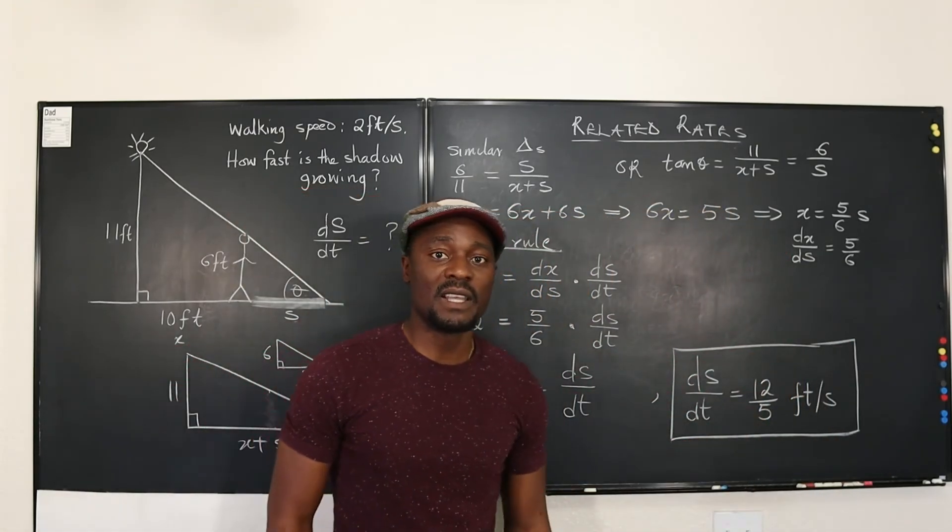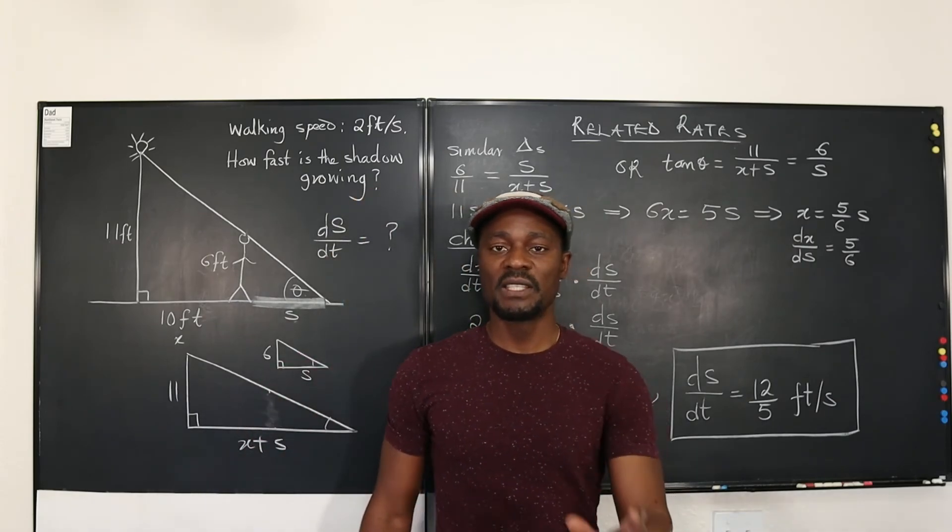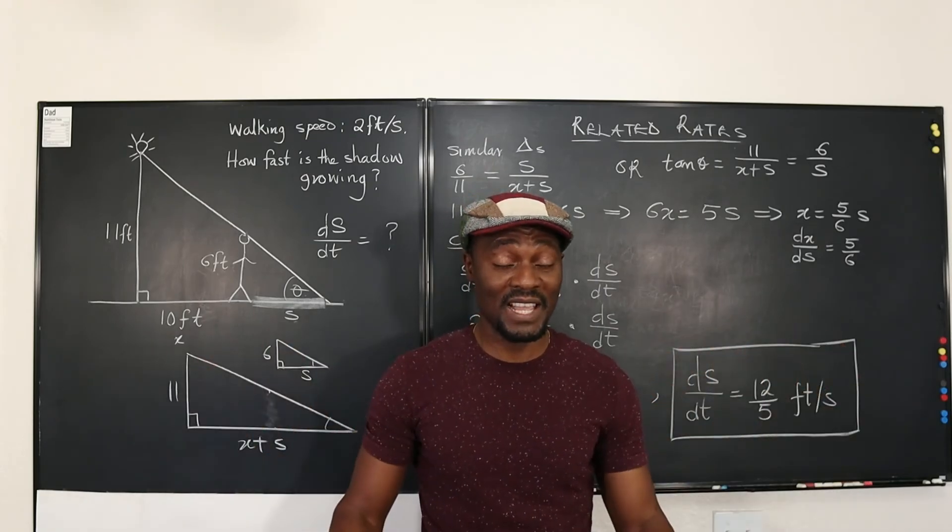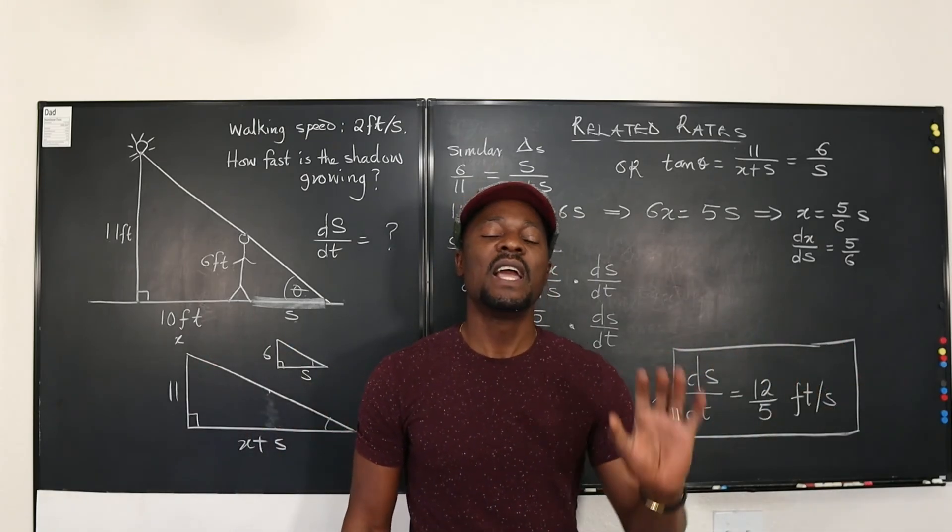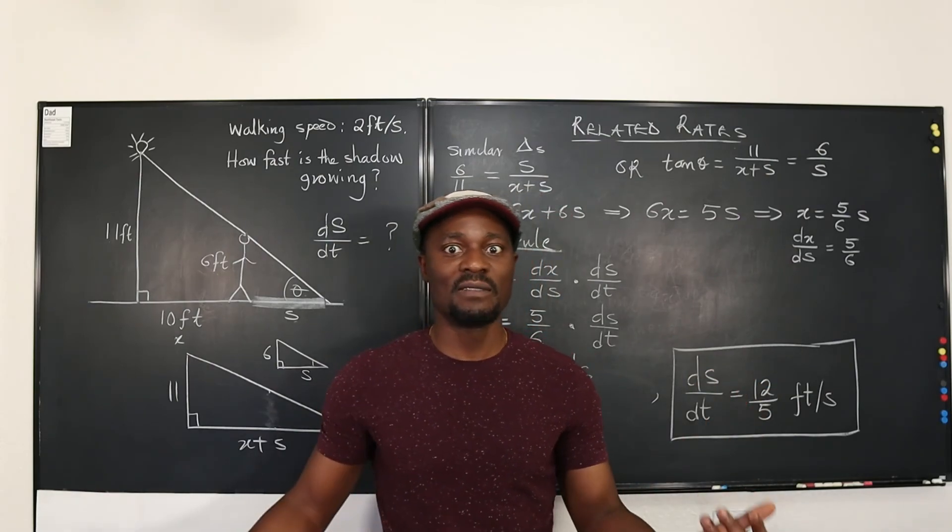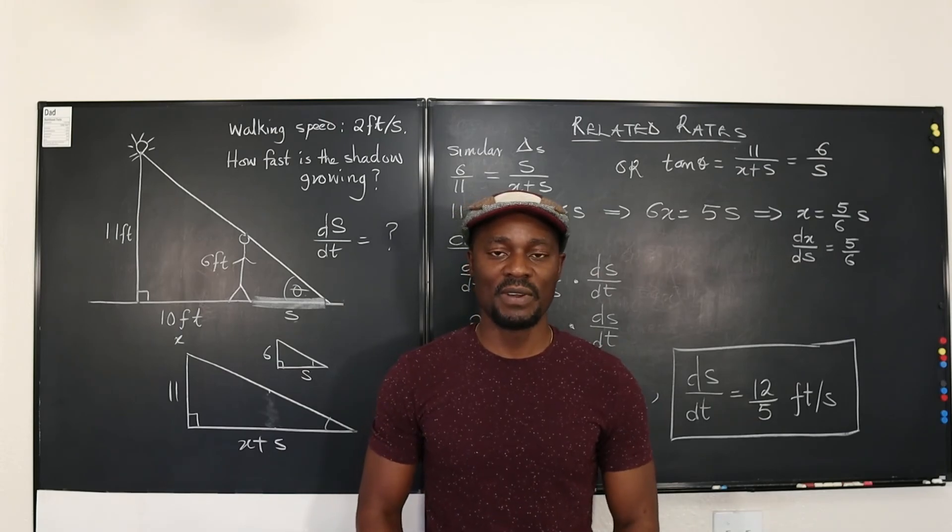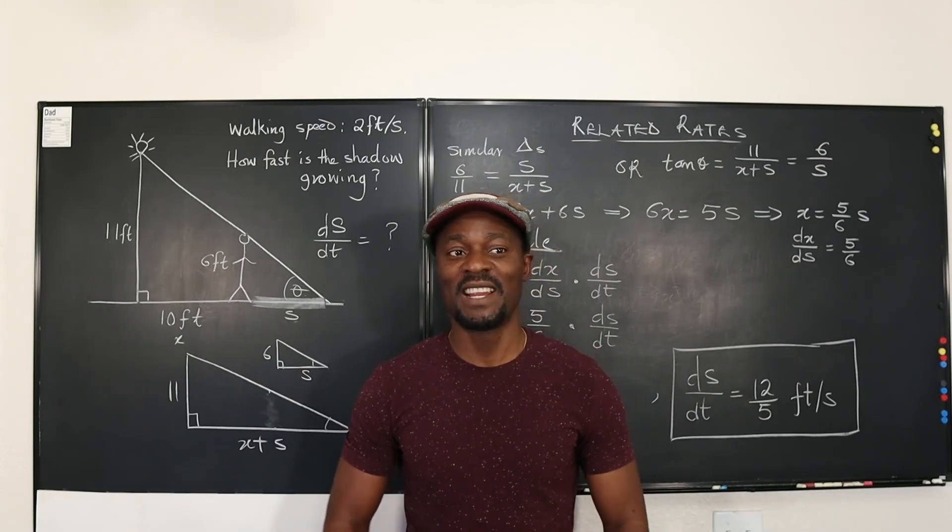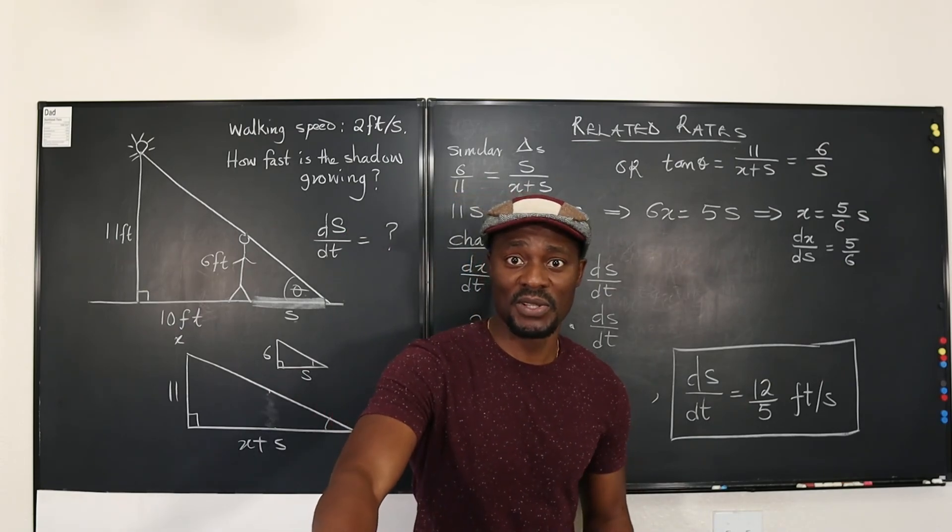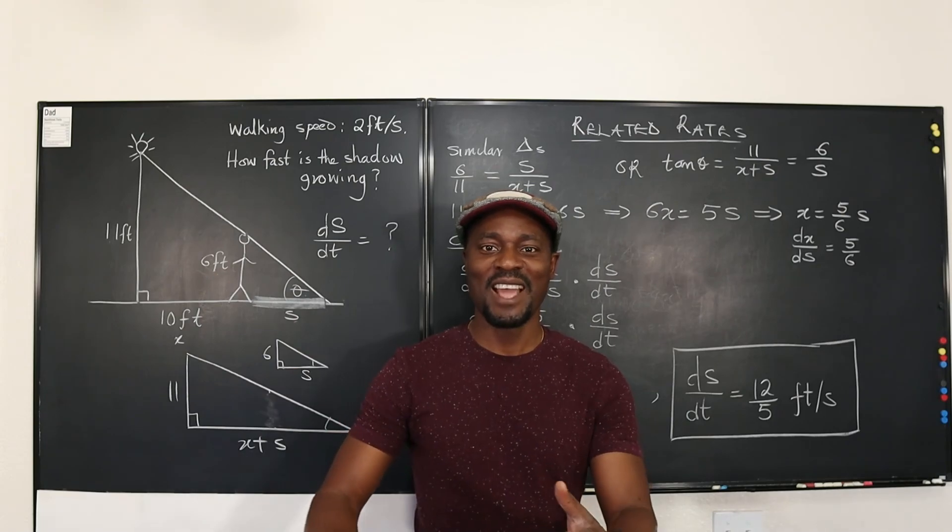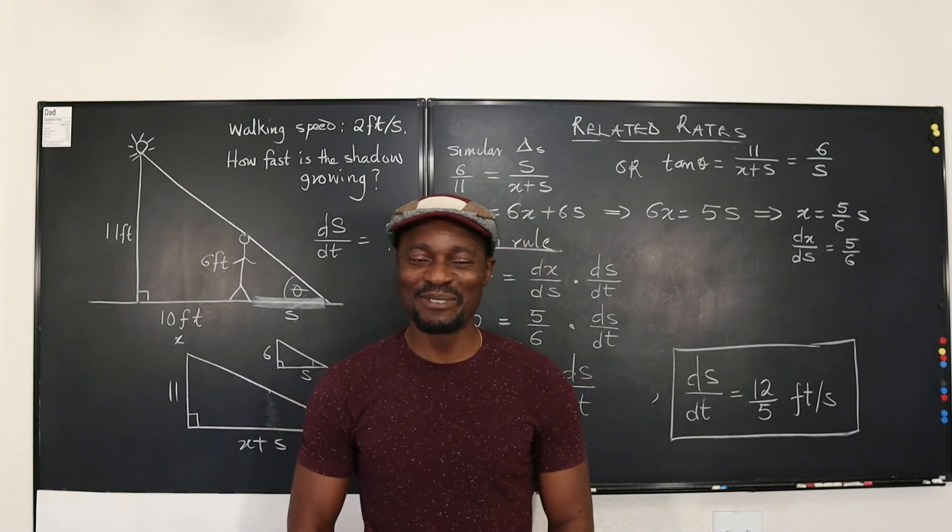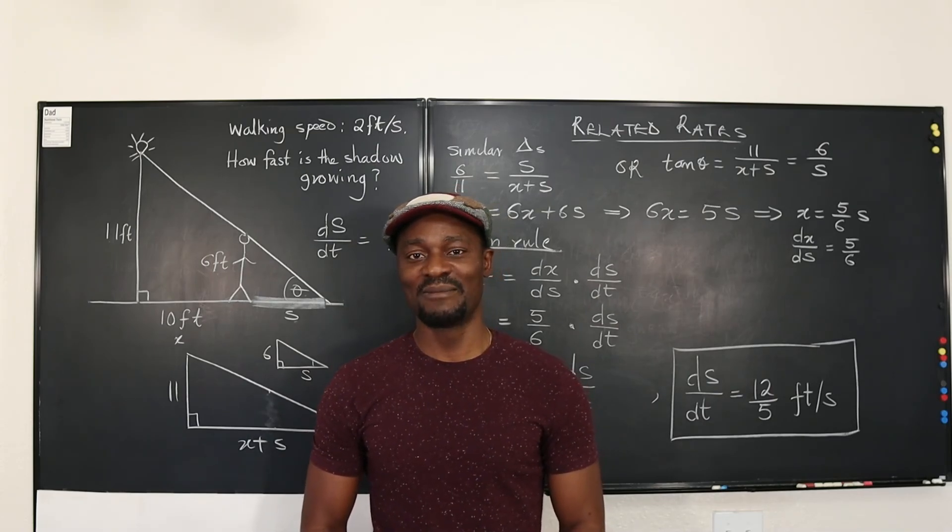So basically that's what you do in every related rate problem. Establish a formula connecting the changing quantities, not everything, the changing quantities. You just need a formula. Take the derivative of that formula with respect to whatever you're looking for, and you'll be fine. I hope this video helped you. If it did, thumbs up, like, share, comment in the comment section. And be subscribed if you're not subscribed. I'll see you in the next video. Don't stop learning because those who stopped learning have stopped living. Bye-bye.